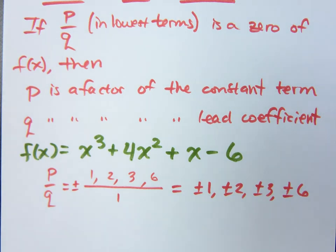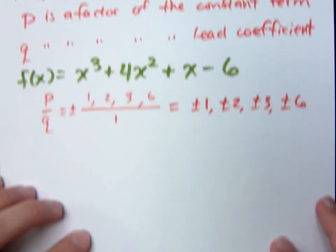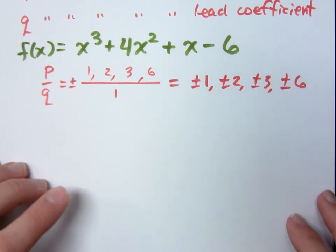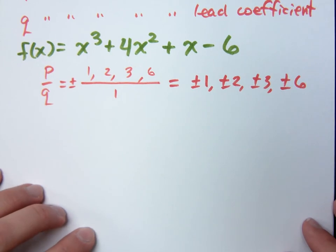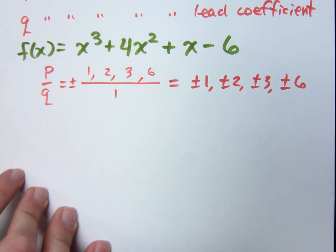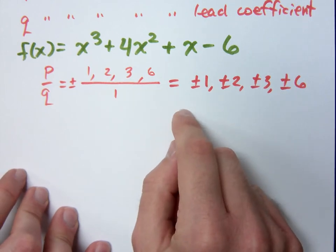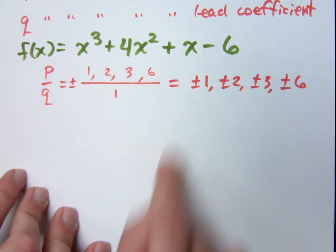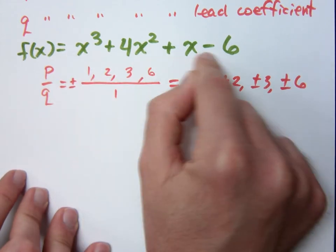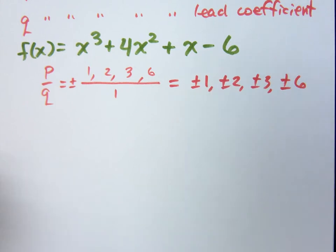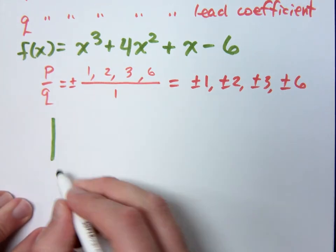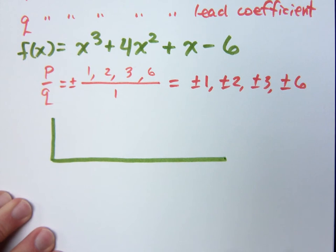Now, let's do the easy stuff. What numbers do you think would be the easiest ones to check? Well, I would say 1 and negative 1 first. Let me show you how easy it is to check to see if 1 is a zero. Combine all of these coefficients and the constant. What's 1 plus 4 plus 1 minus 6? Zero. That means that 1 is a zero.